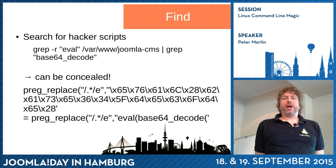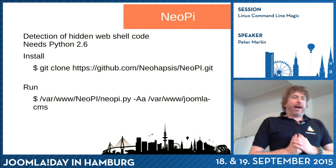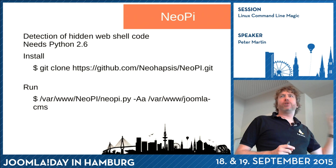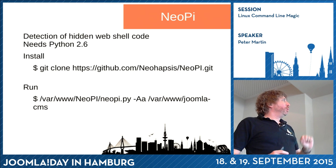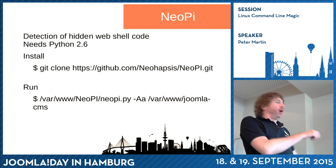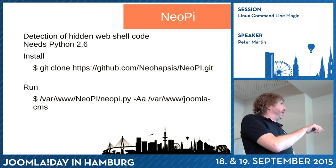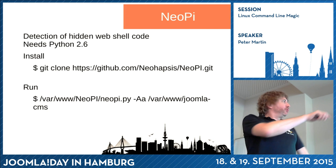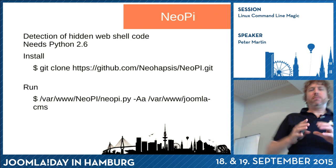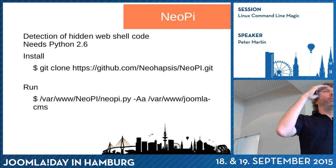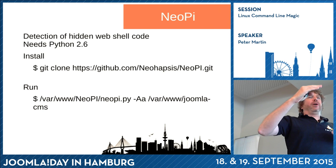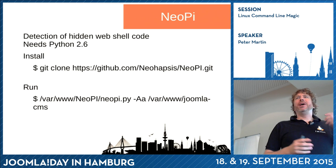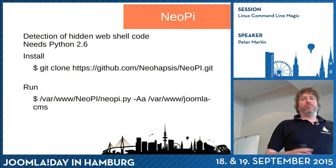Fortunately, someone created a script called Neopi. I like it — this is a really awesome script. You need Python installed on your server. You can clone it from GitHub and run it with some commands specifying the folder to scan. It will scan all the files and show you top-ten lists of suspicious files — really long files or files with a lot of weird characters. It helps you find suspicious files, though most are just normal files that appear suspicious.